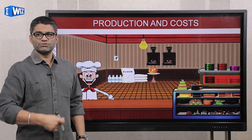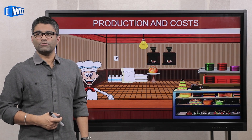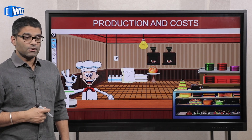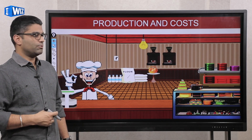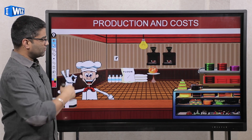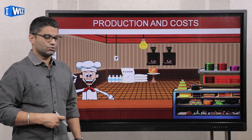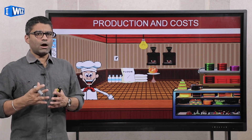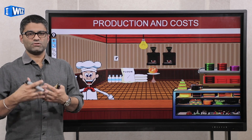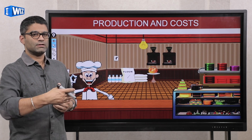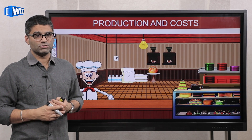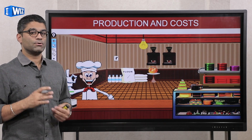I'm going to use this example throughout this chapter. I'm going to assume that you are running a bakery in which you are selling cakes and pastries. So think about this: until now you've thought about consumers, you've thought of yourself as a consumer. Now from here on, for probably the next 15 to 20 videos, you're going to be thinking of yourself as a producer.